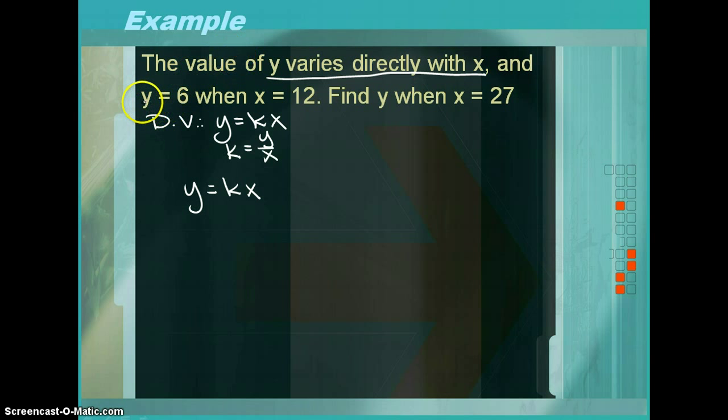Then, you'll notice that it will always give you a y and an x that go hand in hand. Therefore, you want to solve for k. k is y divided by x. So, in this case, 6 divided by 12, which is 1 half. So, your first step is to find the k.